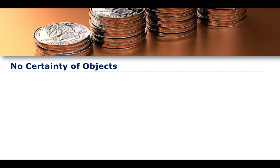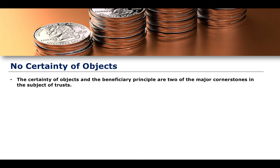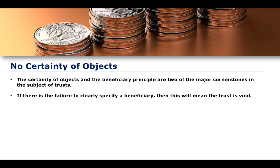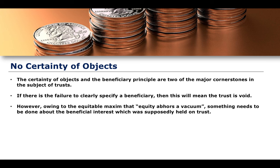The first circumstance is that there may not be a certainty of objects. The certainty of objects and the beneficiary principle are two of the major cornerstones of the subject of trusts. A previous case noted that it is a cornerstone of English trust law that a trust must have a beneficiary that is either ascertainable or has been ascertained. If there is a failure to clearly specify the existence of a beneficiary, the trust becomes void and unenforceable because there is no beneficiary.